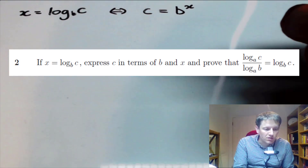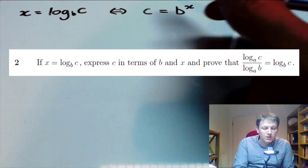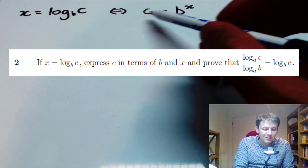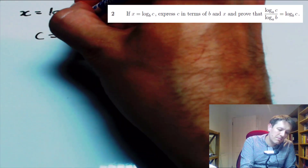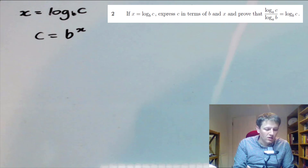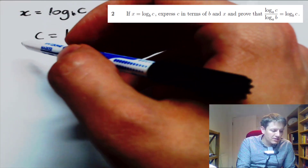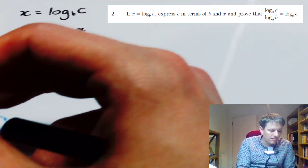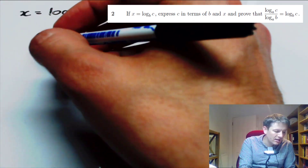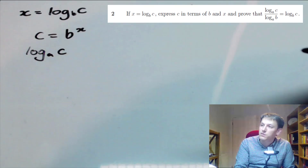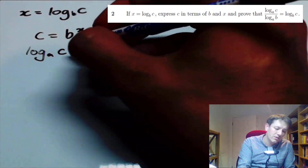This is bookwork you could know from A level, but even at this very beginning, a hint has been given. If we start with c equals b to the x, that's the way to go about this. What we want to do now is take log base a — in the result we're trying to prove, we've got log base a of c as one of the objects, so it makes sense to do that.